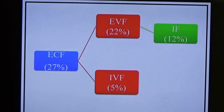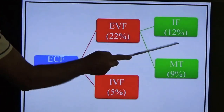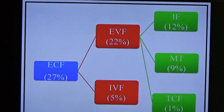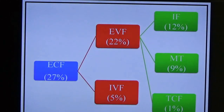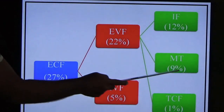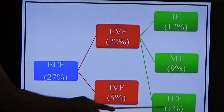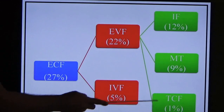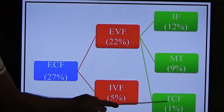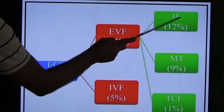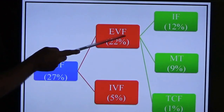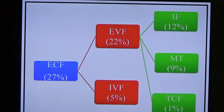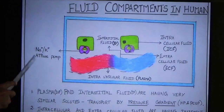Extravascular fluid (EVF) is again divided into three types: interstitial fluid (12%), mesenchymal tissue fluid, and transcellular fluid. Interstitial fluid is the fluid present between the cells. Mesenchymal tissue is dense connective tissue containing fluid — such as in bones and cartilages. Transcellular fluid is fluid within epithelial-lined spaces; examples include CSF and lymph, carrying about 1%.